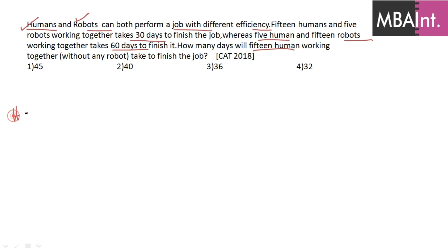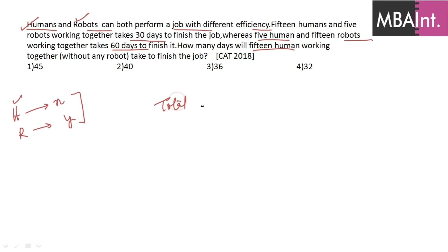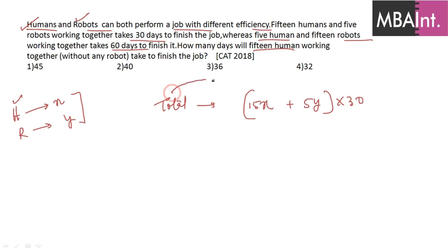Let's assign variables: let the efficiency of a human be x and the efficiency of a robot be y. Now, 15 humans and 5 robots working together for 30 days complete the total work. So I can write: total work = (15x + 5y) × 30.